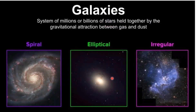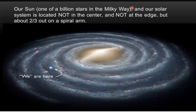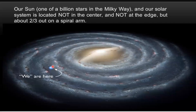This picture shows the different types of galaxies. Galaxies are in different shapes like spiral galaxy and elliptical galaxy, and some galaxies do not have any definite shape — they are very irregular. A system of millions or billions of stars held together by gravitational attraction between gas and dust is called a galaxy. Our sun is one of a billion stars in the Milky Way. Our solar system is located not in the center and not at the edge, but two-thirds along a spiral arm, as shown here in the Milky Way galaxy.